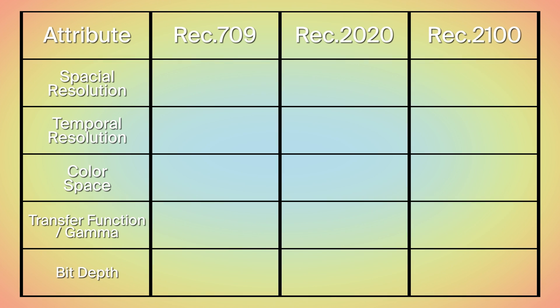Rec.709 has a resolution of 1920 by 1080. It can be up to 50 frames per second and uses the Rec.709 color space. For gamma, Rec.709 is scene-referred, but for displaying it is common practice to use a gamma of 2.4. Rec.709 can have a bit depth of 8 or 10 bits.